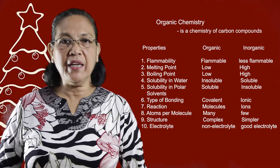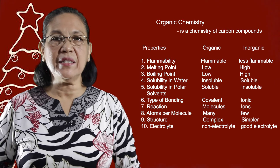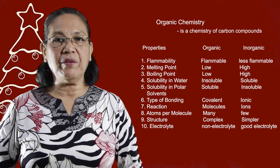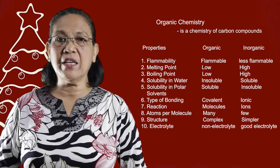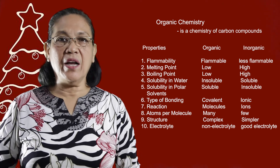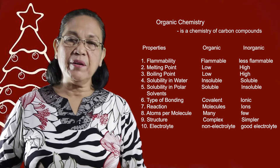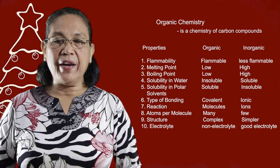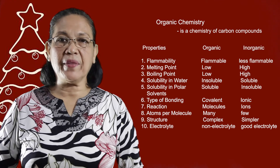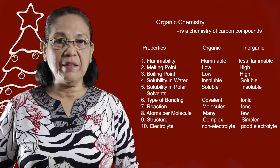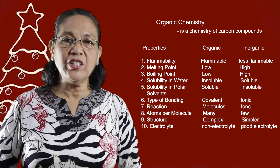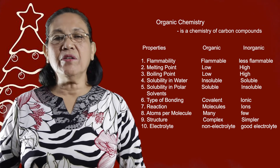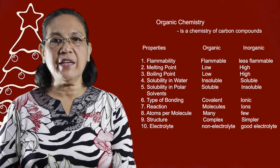Another property to be compared is that of being an electrolyte. An electrolyte is a substance that conducts electricity when in solution form. Comparing organic and inorganic compounds: organic compounds are non-electrolytes, while inorganic compounds are good electrolytes. This means organic compounds do not conduct electricity, while inorganic compounds do. For example, when sugar is in solution form, it is not a good electrolyte and does not conduct electricity, while sodium chloride in solution form conducts electricity. Those are the comparisons between organic and inorganic compounds.